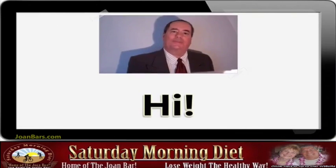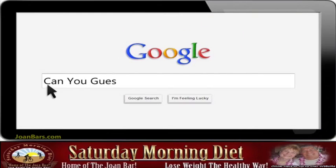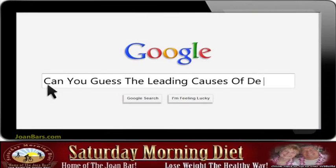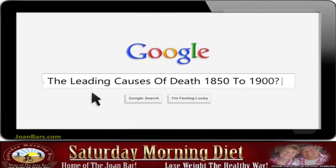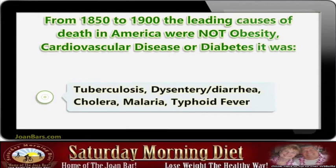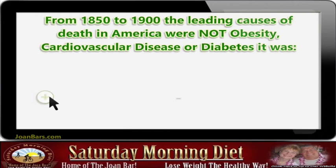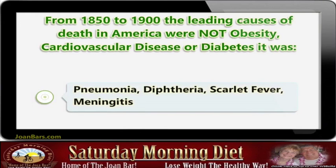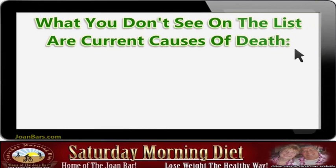Can you guess the leading causes of death from 1850 to 1900? The leading causes of death in America were not obesity, cardiovascular disease, or diabetes — it was tuberculosis, dysentery, diarrhea, cholera, malaria, typhoid fever, pneumonia, diphtheria, scarlet fever, and meningitis.